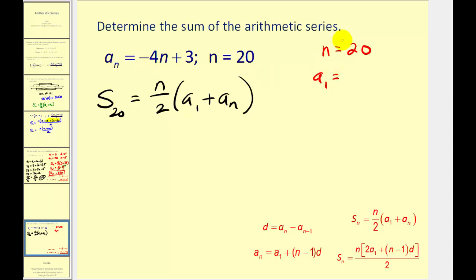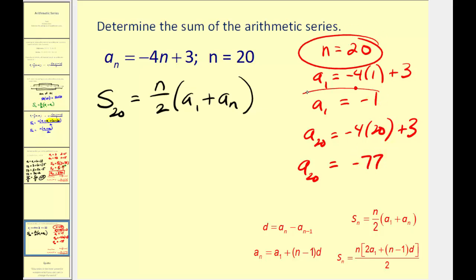We don't know a sub one but we can find it with this formula. A sub one is equal to negative four times one plus three. So a sub one equals negative four plus three. That's negative one. We also need a sub n which means we need a sub twenty. So we'll have negative four times twenty plus three. That'll be negative eighty plus three. That's negative seventy-seven. So we have n, we have a sub one, and we have a sub twenty. That's all we need.